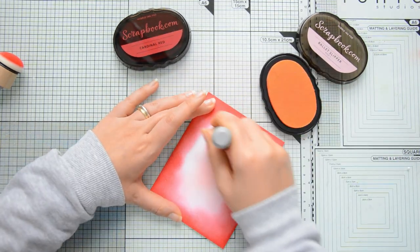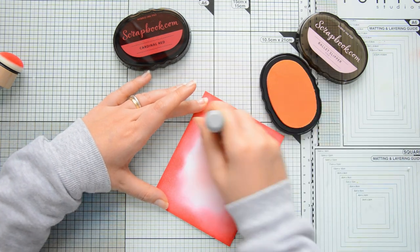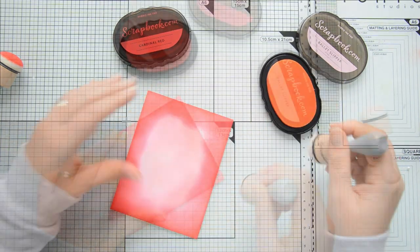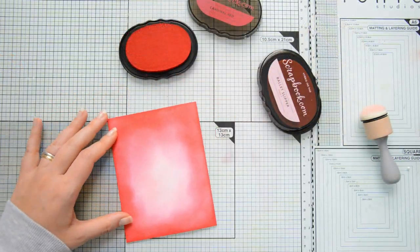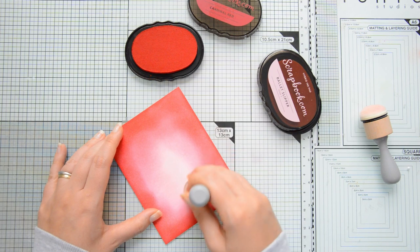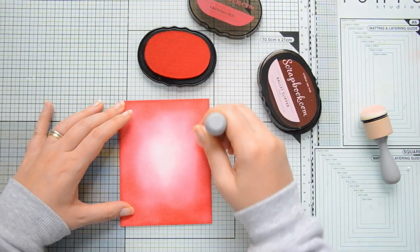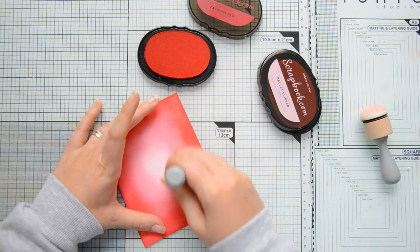So I first added the cardinal red on the outer portion of the card background. I then started filling in the center with ballet slippers and then I went back on top of those areas with my cardinal red, using a lighter hand so that the color would be a little bit fainter.